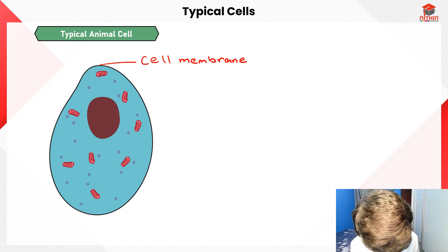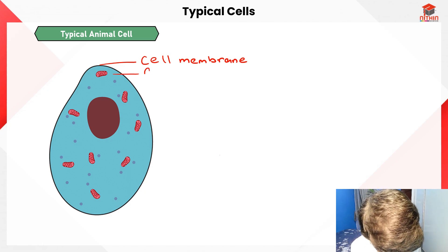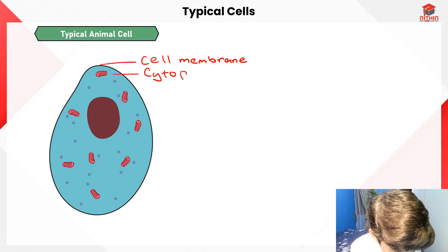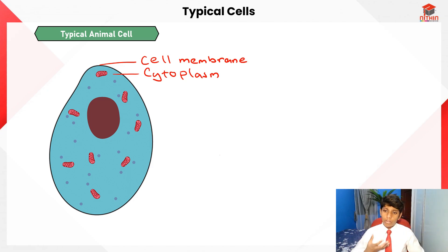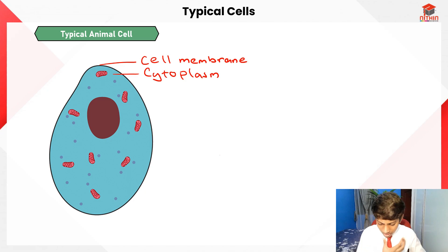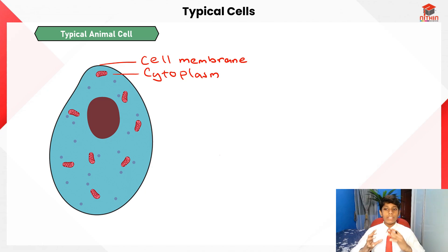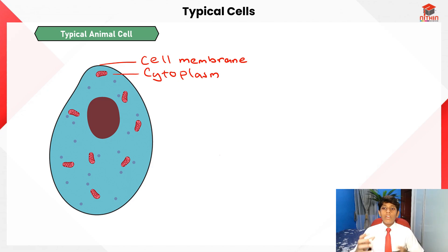Next, the cytoplasm. The cytoplasm is a jelly-like substance in which all the organelles and chemicals are contained. This is where all cell activities and chemical reactions take place. In secondary school, one of the key definitions of cytoplasm is that it is the site where chemical reactions occur — this is something new you're learning.